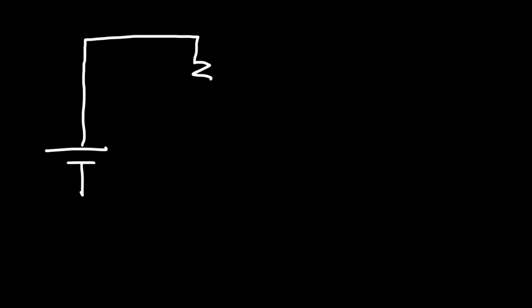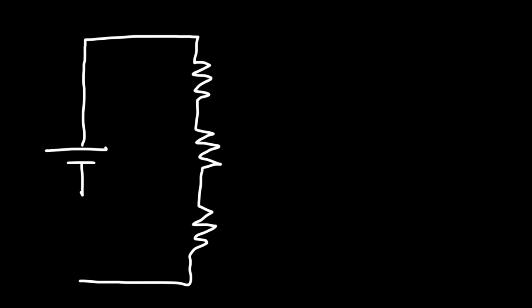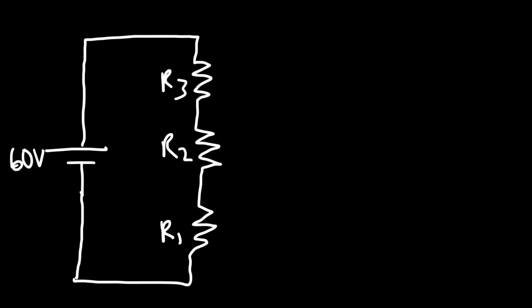Now let's say if we have three resistors connected in series. Let's say this is R1, R2, and R3, and it's connected across a 60-volt battery. Now let's say that R1 has a value of 3 ohms, R2 is 4 ohms, and R3 is 5 ohms.